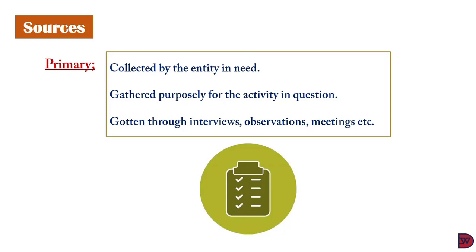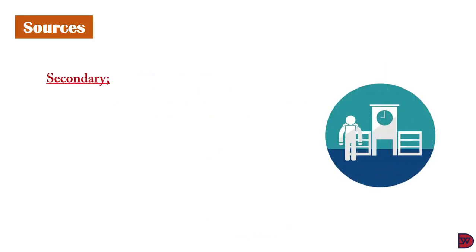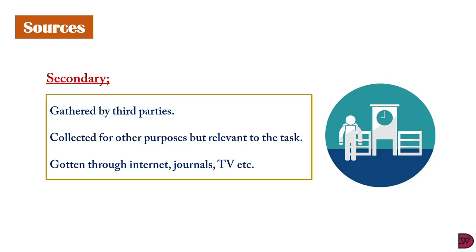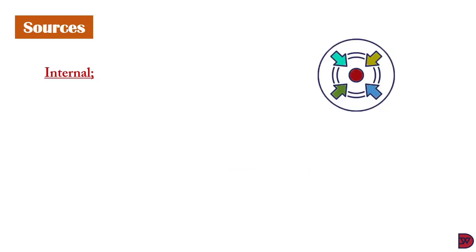Data can also be sought from a secondary source. Here there is the use of pre-existing facts gathered and published by a third party. The data is originally collected for a different purpose but has some relevance to the purpose being sought to achieve by the entity. It may also be collected via the web, journals, news portals, or government agencies. In the example above, the business can search the internet to ascertain the gender makeup of the market.